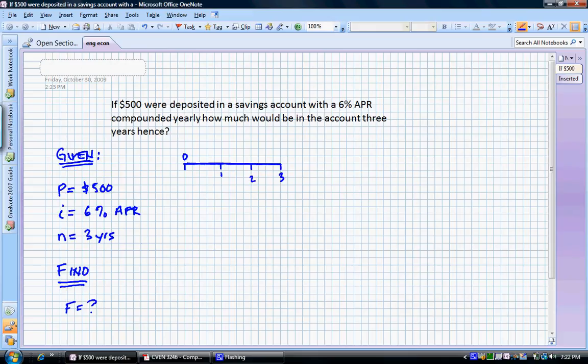At time zero, the initial period of the investment, we're going to have a downward arrow that represents our initial investment of $500. Remember, that means that we have a point of view of the investor in this problem. And what we're concerned with is what is the future value of that account? How much is it worth three years later? We don't know.